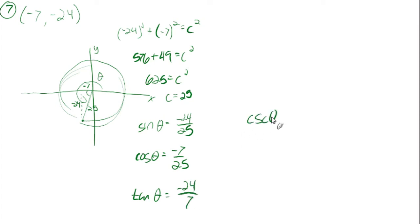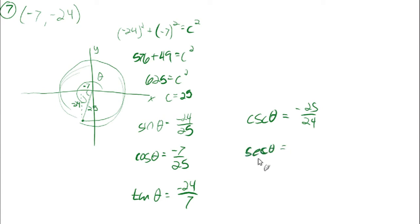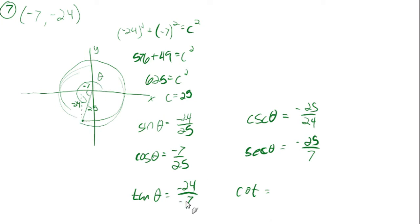The cosecant is just the reciprocal of the sine, so negative 25 over 24. The secant is the reciprocal of the cosine, negative 25 over 7. The tangent was actually negative 24 over negative 7, so positive 24 over 7. And the cotangent of theta would be 7 over 24.